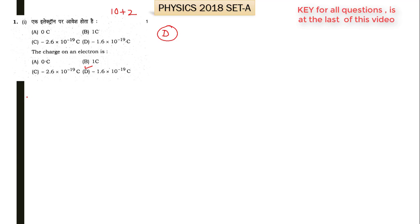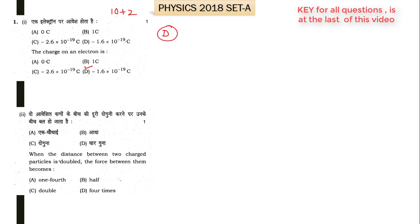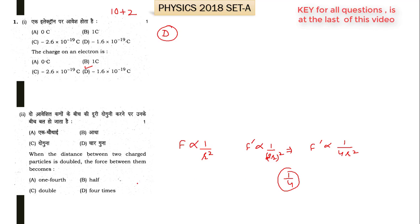The second question says: when the distance between two charged particles is doubled, the force between them becomes? The electrostatic force F is inversely proportional to the square of the distance. If distance is doubled to 2r, then F' is proportional to 1/(2r)², which gives 1/4 of its initial value. So A is the right option for the second question.